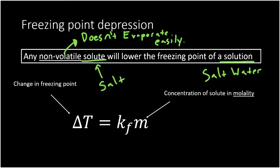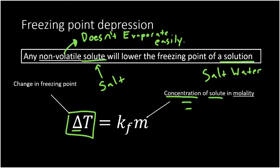Freezing point depression works by adding a non-volatile solute that lowers the freezing point of a solution. How much does it lower it? That's what the delta T expression calculates. The delta — that Greek letter that looks like a triangle — means change. How much the freezing point changes depends on the concentration of our solute. The more salt you add, the lower that freezing point gets. You can actually see this in your freezer: put a bunch of salt in one solution and none in the other, and after an hour one will be frozen and one won't.